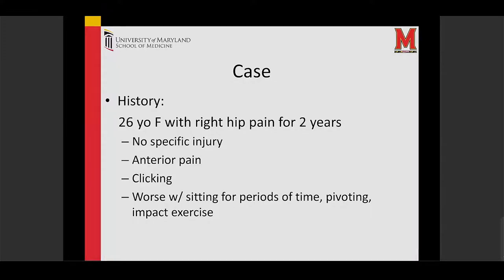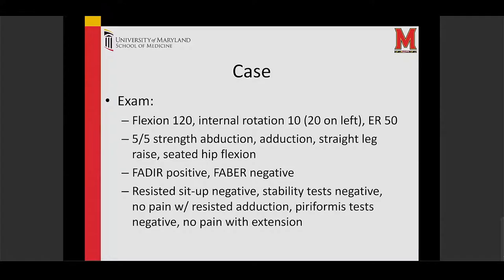That's a problem for her because she can't do her normal exercise. Her physical exam shows good flexion of the hip. She has limited internal rotation — only 10 degrees compared to 20 degrees in her other hip — but she has good strength. The FADER test, which is flexion, adduction, internal rotation, is a test we commonly use to test for pain in the hip joint, and she's positive there. Many of the other tests are negative.